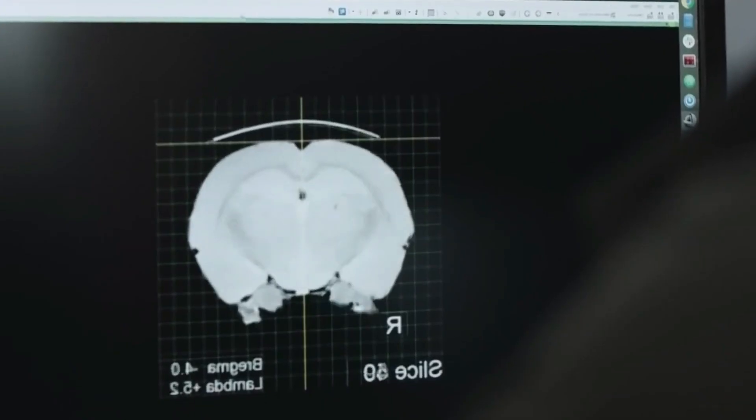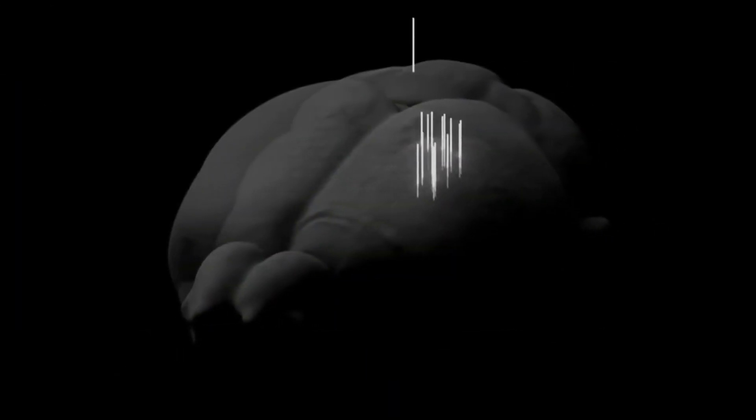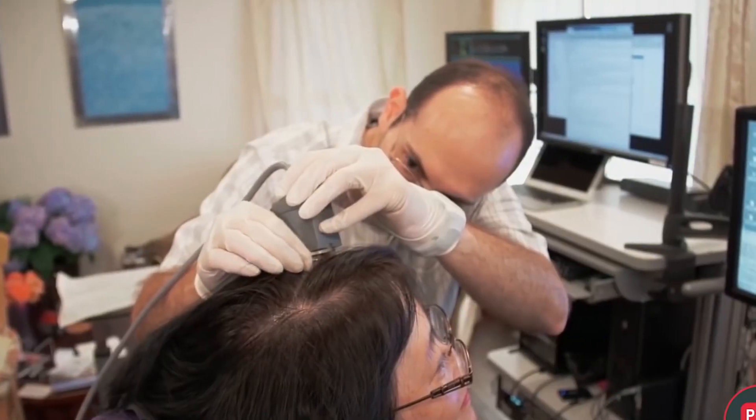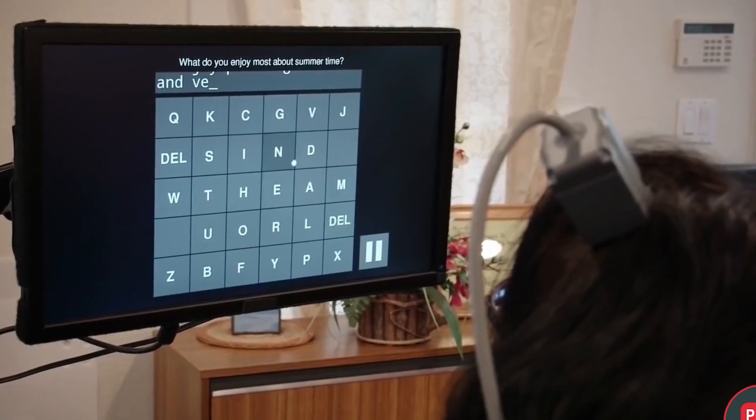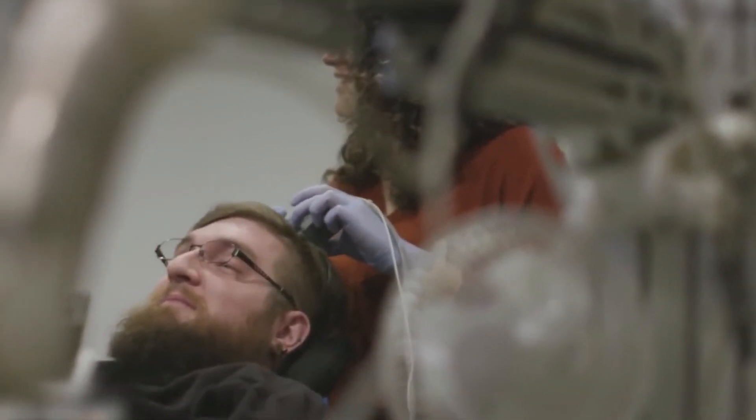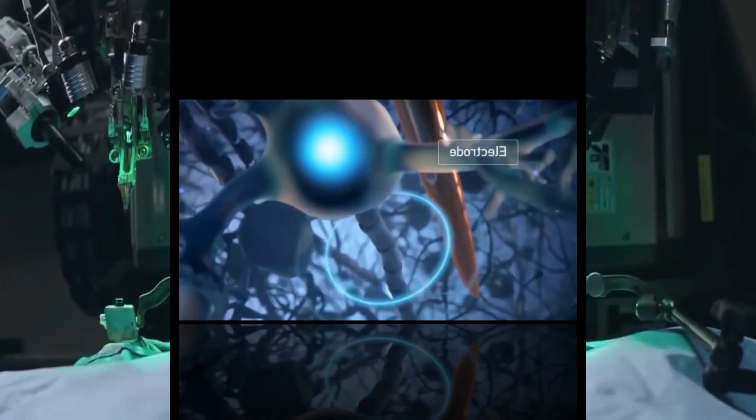To achieve this, Neuralink implants small threads into the brain. These threads contain sensors that can detect neural signals like electrical pulses. The threads will be able to detect these signals, interpret them, and then communicate with external devices such as computers and phones. In addition to controlling devices with our thoughts, the technology could also be used to enhance memory and other cognitive abilities.